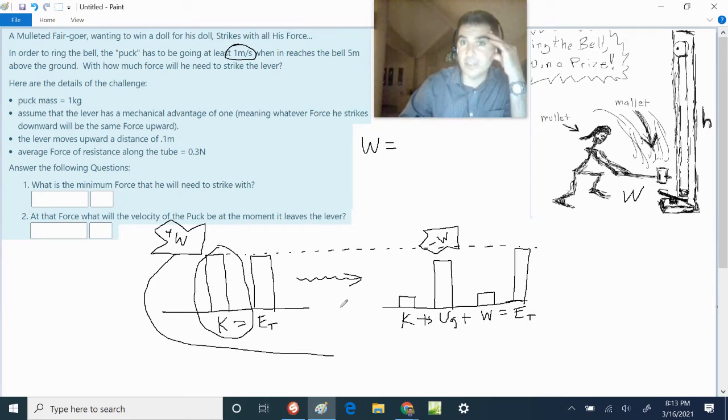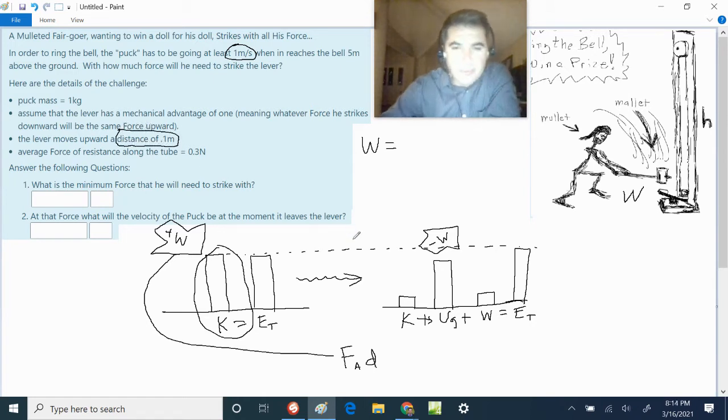What we do need to know is the work. How hard does he need to hit it? That's the work. That work is the F applied times the distance that he hits it. And the lever is going to move 0.1, that distance there, that 0.1.